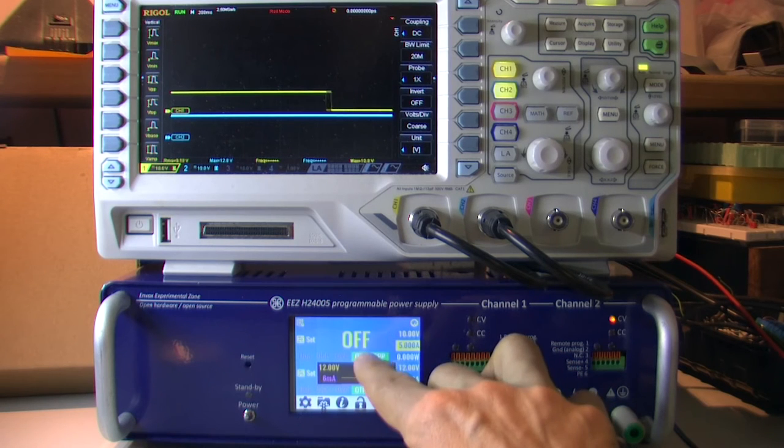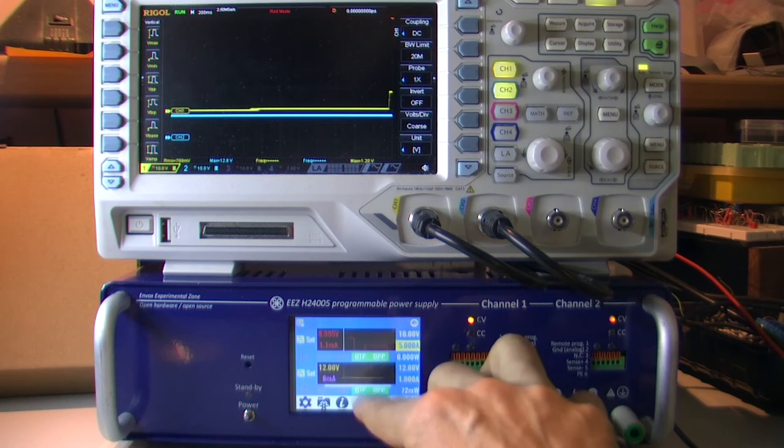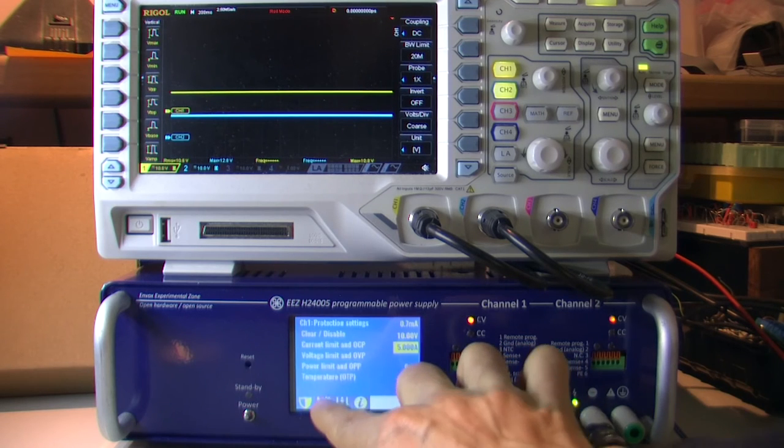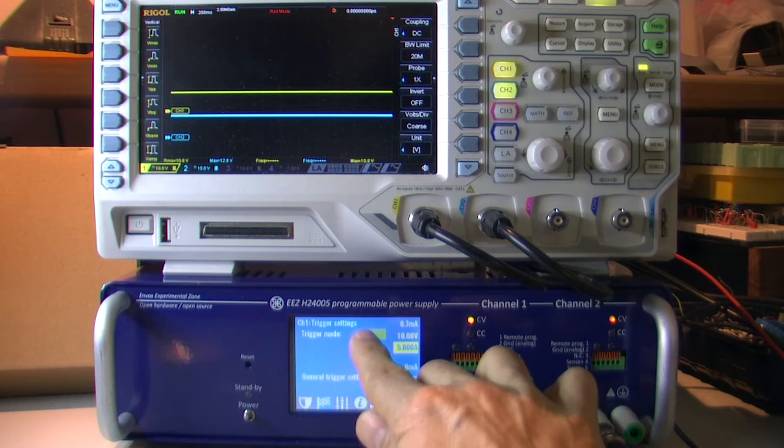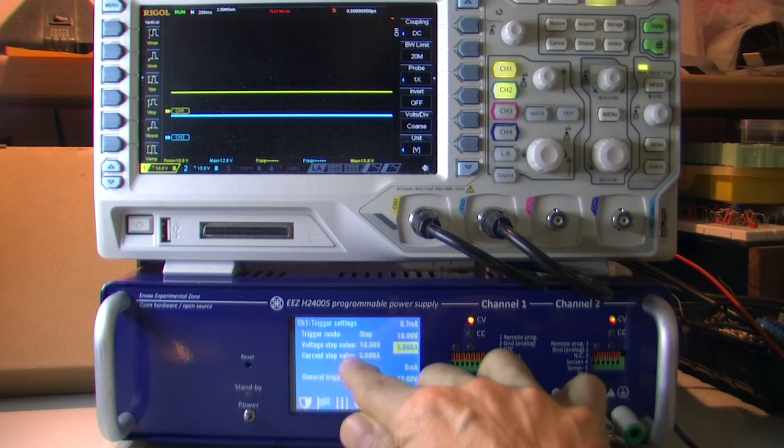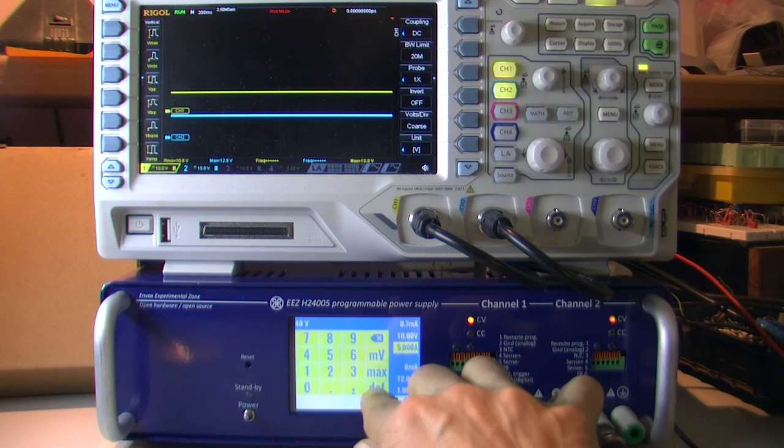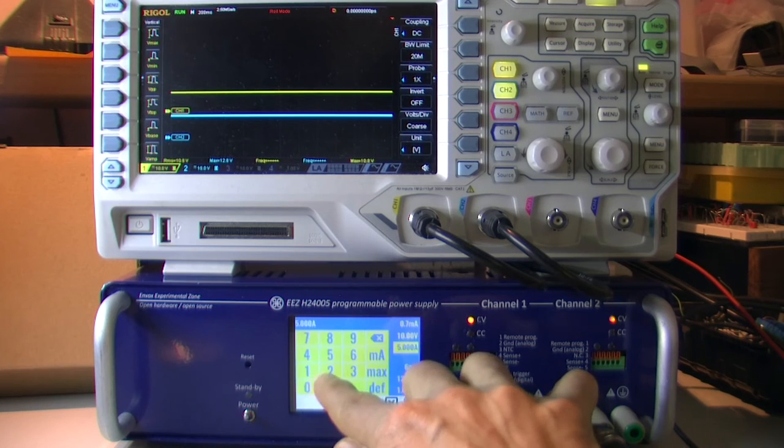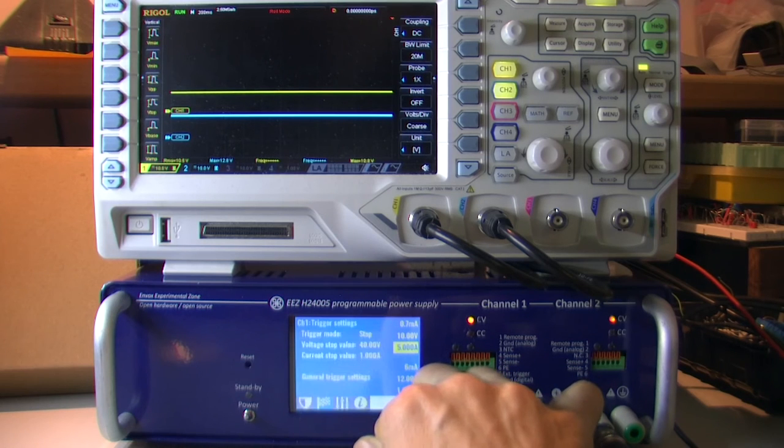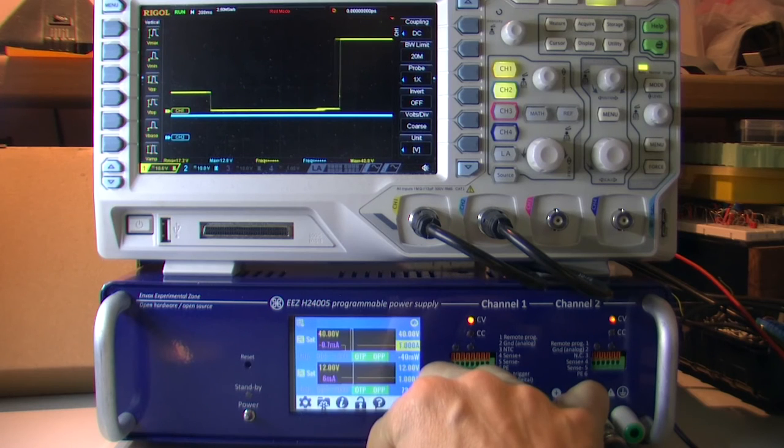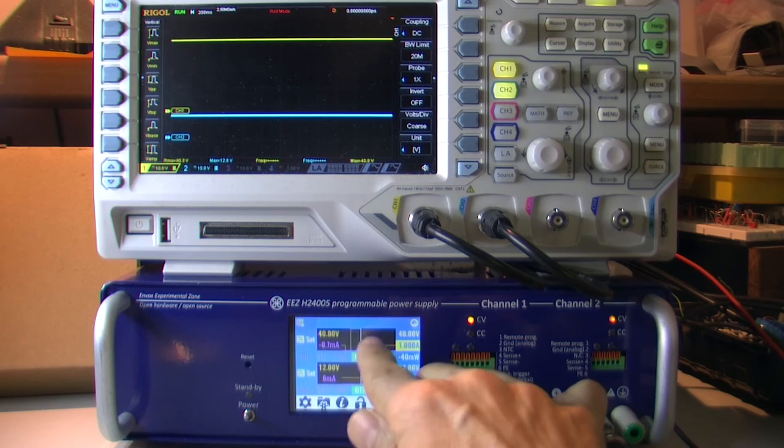Or now we have possibility to set that to fixed. And after that, trigger is disabled. We can see that it's fixed. We need to go back to step to change that. Let's say 40 here, one here. And now we can see that it's up to 40.